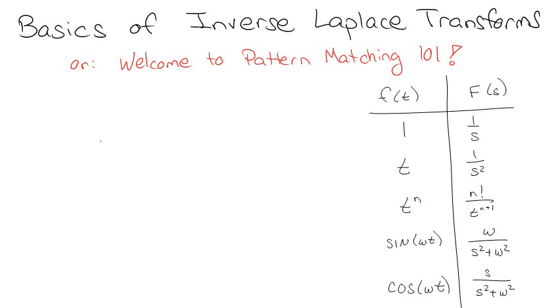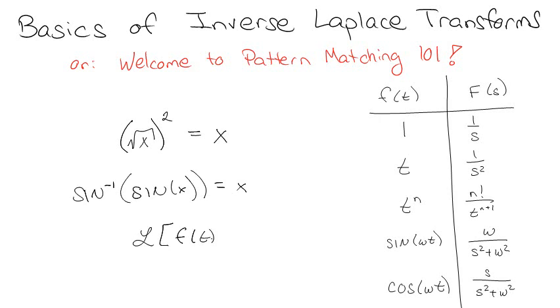By that I mean, say we have functions all the time that we use that are inverses. We have a square root function, and the inverse of a square root function is a square function. It gives you the thing right back. Or you have a sine function, and we also have something called inverse sine. If I take the inverse sine of sine, I just get x. Well, the same thing happens with Laplace. If I take the Laplace of a function, and then I take the inverse Laplace of that function, I get the same function back.